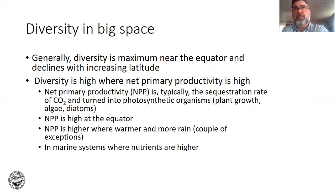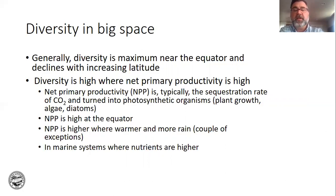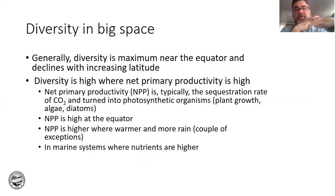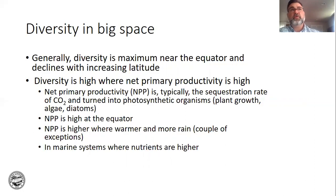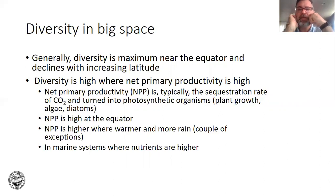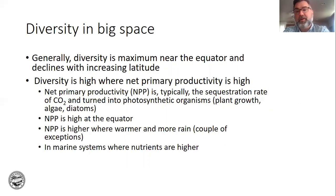The other pattern is where net primary productivity is high, you have lots of species. Net primary productivity is when you take atmospheric CO2 and fix it — attach this gas to a molecule — and it becomes sugars, which turn into cellulose and other byproducts. It's basically the rate at which plants grow. Most of the material that makes up a plant was CO2. Where that occurs fastest you have lots of species, and that occurs highest at the equator on land.